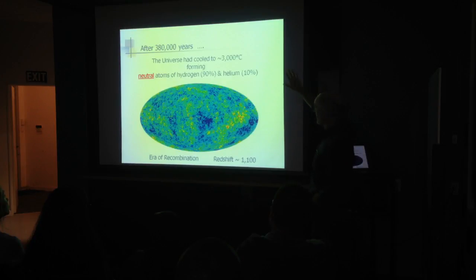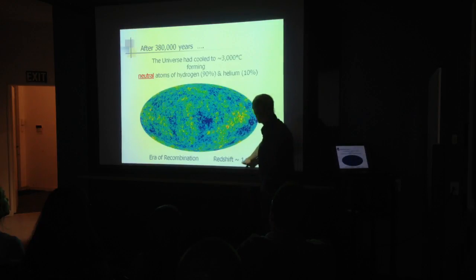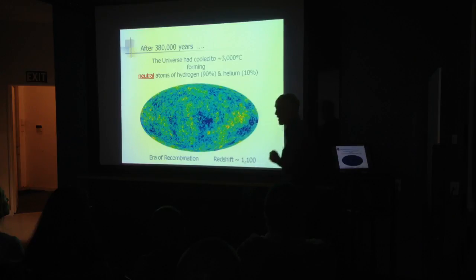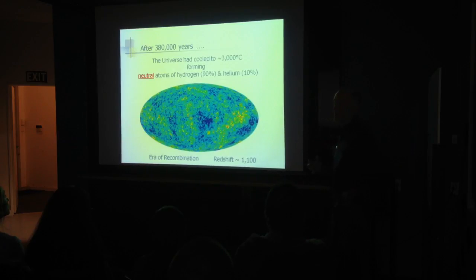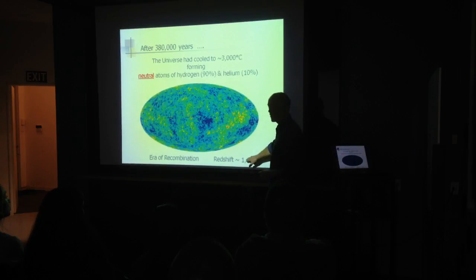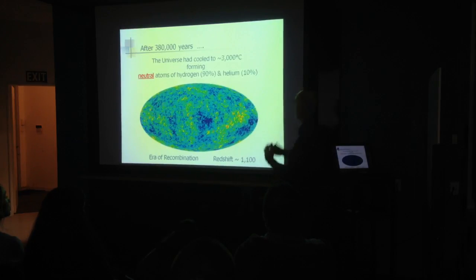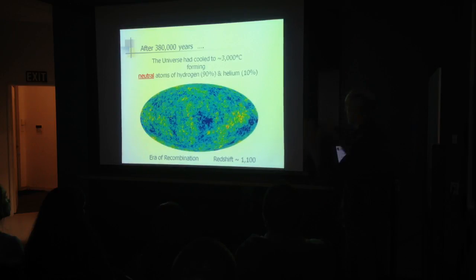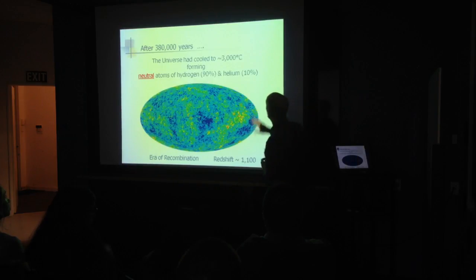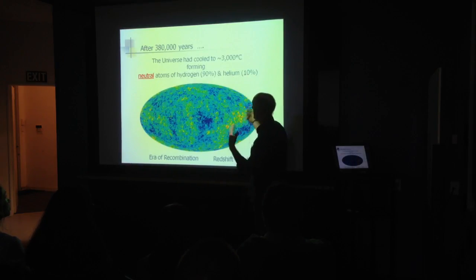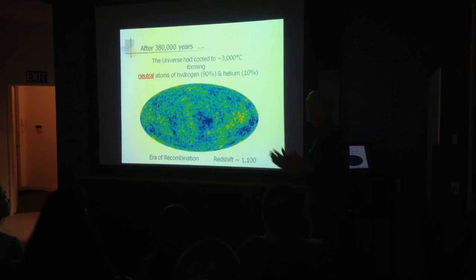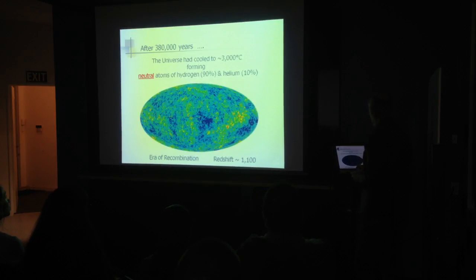At 380,000 years, that corresponds to a redshift of about 1,100 — meaning the universe today has expanded about 1,100 times in size since that radiation was released. Those photons were free to travel through the universe, and the universe continued to cool. 3,000 degrees Celsius enabled neutral atoms to form, and then again nothing happened for another few hundred million years.